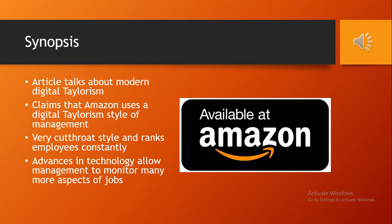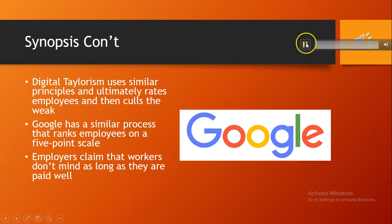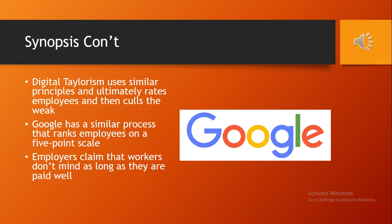In this system, employees are ranked and the worst workers are usually culled. The second company mentioned is Google, which similarly ranks lower-performing employees. Specifically, Google has a process that ranks employees on a five-point scale. Interestingly, the article noted that Google employees don't mind the competitive ranking process too much because the pay is good — they put up with it because they get to work at Google.